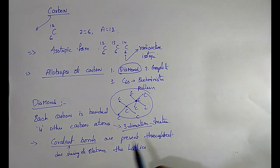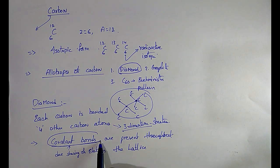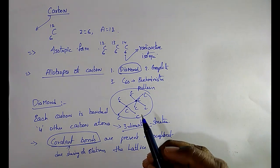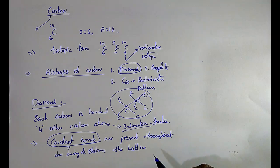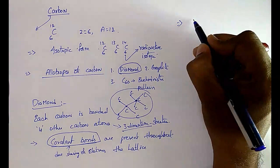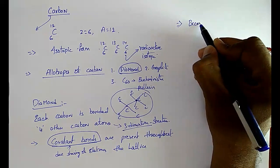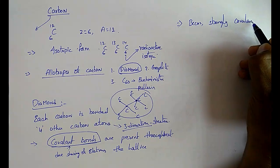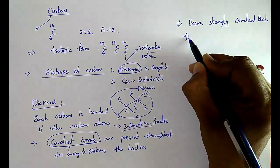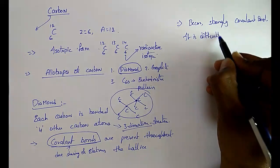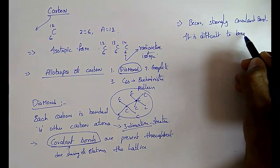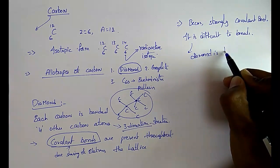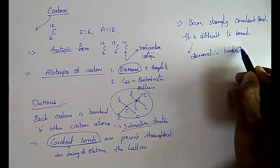Due to the strongly covalent bonds, it is very difficult to break diamond. That is why diamond is the hardest known substance — because of its strongly covalent bonds, it is difficult to break.